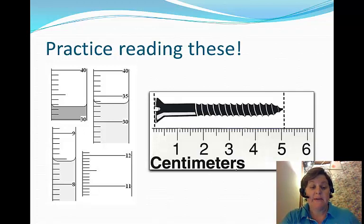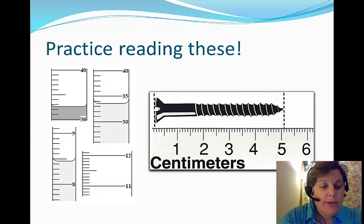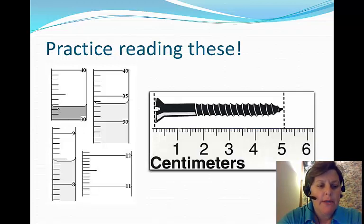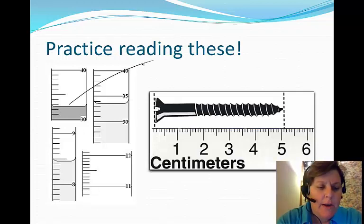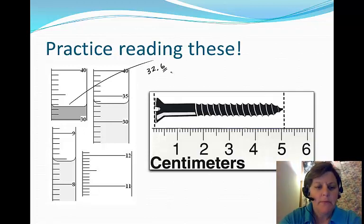Now, what you might want to do is pause the video now, actually write your answers down, push play again, and then you'll hear what I came up with as the right answer. Okay, so here we go. If I was going to read this, I see this is between 30 and 40. But these little lines here are ones. In other words, this is 31, 32, 33, 34, etc. So I probably would read this one as 32.6. And that's my uncertain digit.